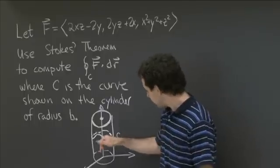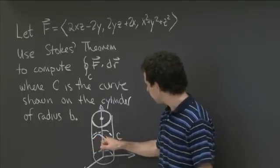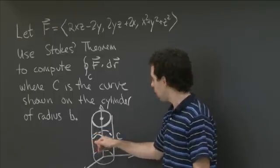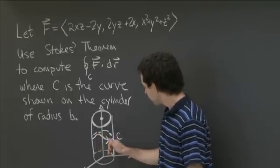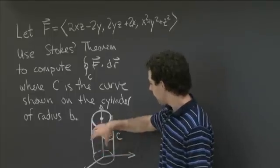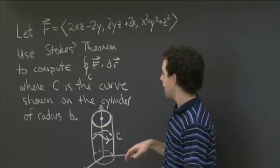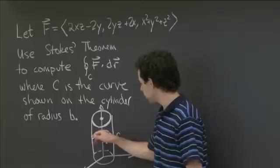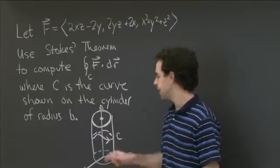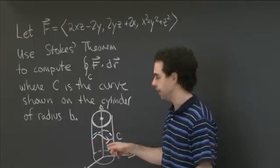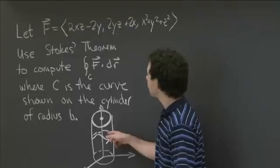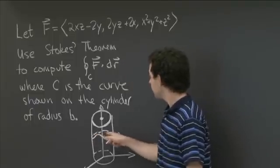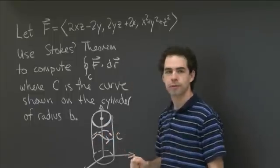We have C, which is this kind of complicated-looking curve that dips up and down and back around. The key thing to know about it is that it all lies on this cylinder of radius b. So C is a curve in the cylinder of radius b that wraps around it once but behaves oddly while wrapping around. I'd like you to use Stokes' Theorem to compute the integral around this curve of F dot dr.